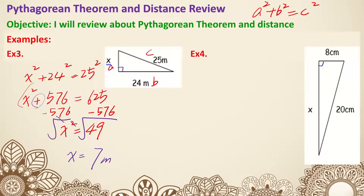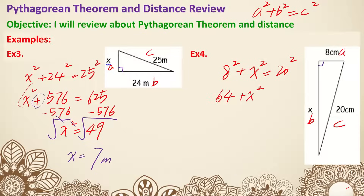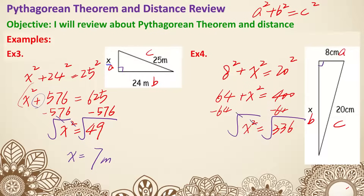You can pause and try example four. It's the same idea: 8 is A, X is B, and 20 is C because 20 is the longest side. Setting up: 8 squared plus X squared equals 20 squared. So 64 plus X squared equals 400. Subtract 64: X squared equals 336. Take the square root — X equals the square root of 336, which is 18.33. Don't forget the unit — centimeters. That's examples three and four.